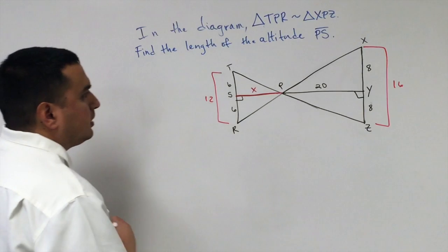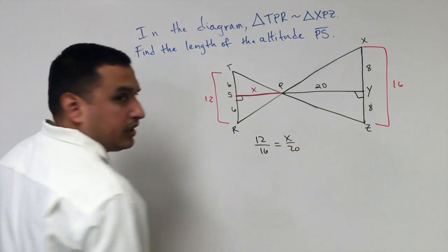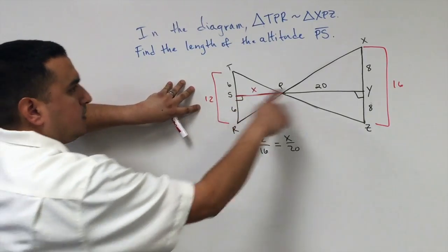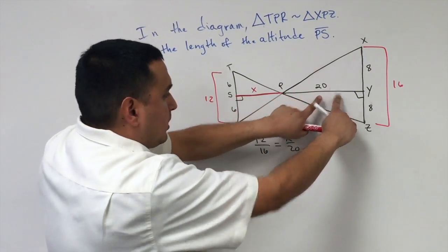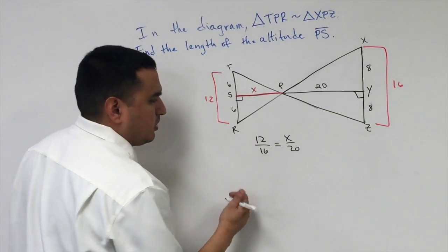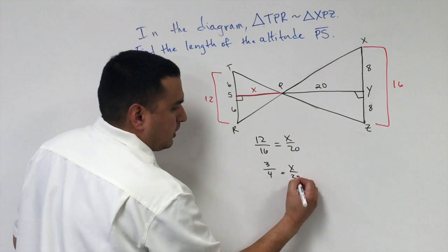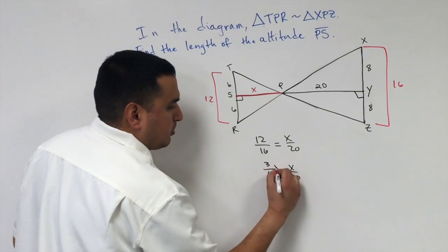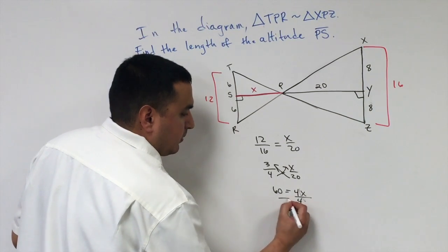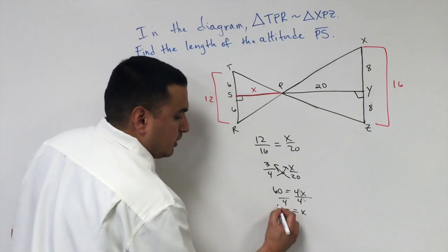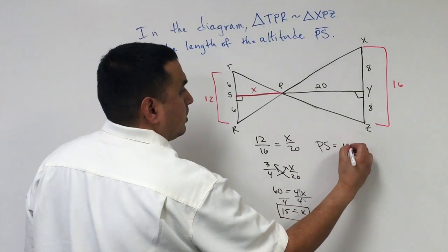So 12 is to 16 as X is to 20. Notice I started with the smaller triangle for 12 to 16, so I'll use small over big for the other ratio too. Reducing by dividing by 4 gives 3 fourths equals X over 20. Cross multiplying, 3 times 20 equals 60 equals 4X. Dividing both sides by 4, X equals 15. The length of PS is 15 units.